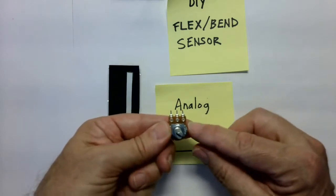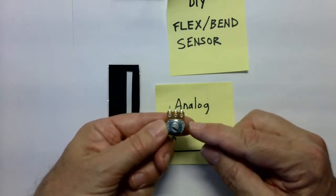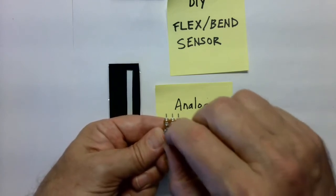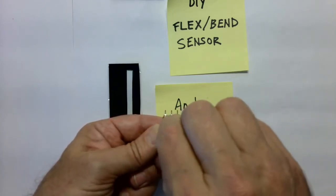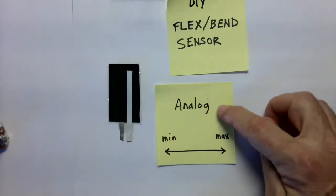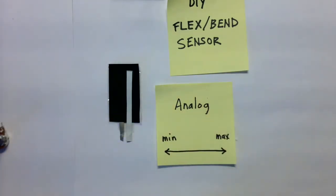So imagine your speakers, your amplifier at home on your sound system. Your volume can be set in a range from 0 to 10. So you can have the volume going up and down. That's what we mean by analog. There's a range, there's a minimum number and a maximum number.